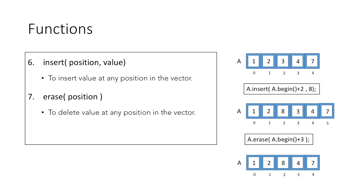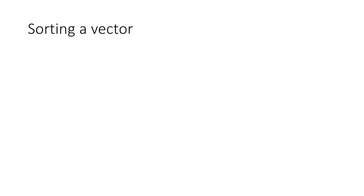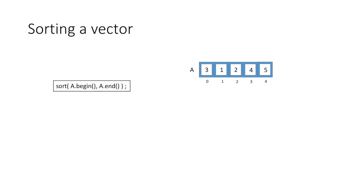We can also use insert and erase to handle multiple values, but that won't be covered in detail here. Another very useful feature is that we can easily sort vectors using the inbuilt sort function in C++. Suppose we need to sort the elements in ascending order — we simply use the sort function and provide the range from a.begin() to a.end(), which would give us a vector with sorted elements.